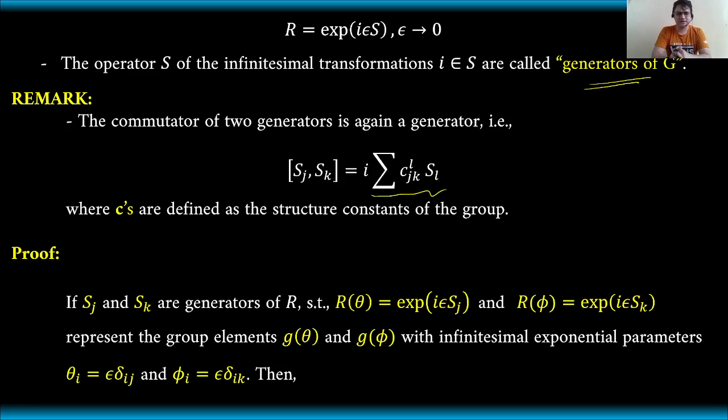We can prove this by considering rotation matrices R as a function of theta equal to e to the i epsilon S_j and R as a function of phi equal to e to the i epsilon S_k, representing the group elements g(theta) and g(phi) with infinitesimal exponential parameters. We will be proving this one in our next video.